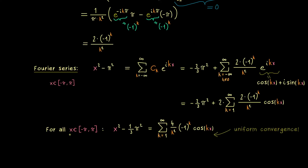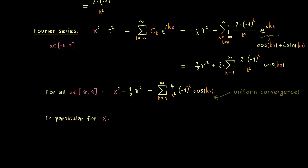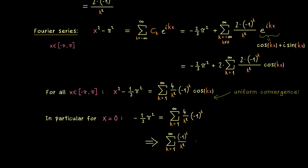For example, putting in x = 0 gets rid of the cosine function on the right-hand side. The left-hand side is just -⅓π², and on the right-hand side, cos(0) = 1 always. Hence we have a simple sum formula for this alternating sum. Dividing by the factor of 4, we get that the alternating sum of 1/k² equals -π²/12 — a really nice result from Fourier theory.